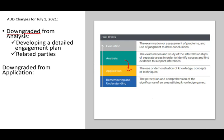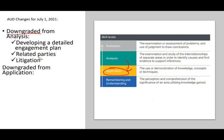Other topics like related parties were similarly downgraded from analysis to application. Each topic may have several tasks — some tasks were downgraded, others were not. You can look at the blueprint, but generally speaking, questions about related parties will now mostly be application-level, as will questions about litigation.